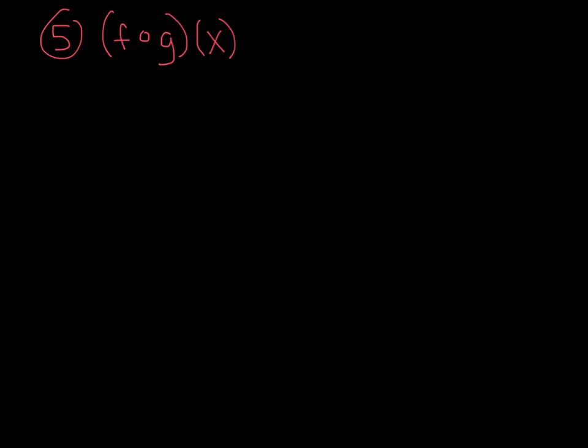For number 5, this is a new type of thing that you maybe haven't seen before, or you maybe haven't seen it in this form. This is going to be what we call function composition. When you see that open circle in between the f and the g, just know that it does not mean multiplication.